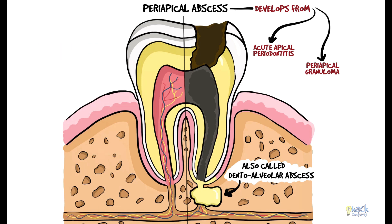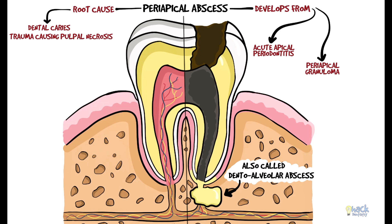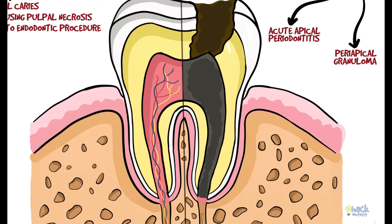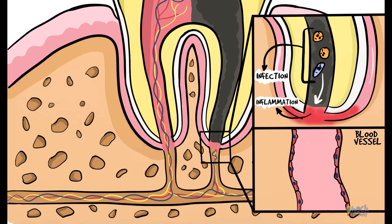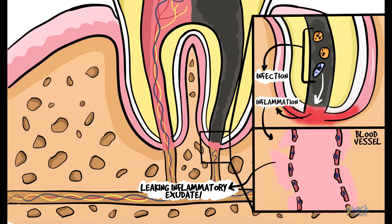Periapical abscess usually develops due to a carious infection of the pulp extending to the periapical region, traumatic injuries causing pulpal necrosis, or even periapical insults due to endodontic procedures. The seeping infection from the necrotic pulp may trigger an acute inflammatory process of the periodontal ligament at the periapex. It is an exudative process where the infection triggers a leakage of plasma proteins or an inflammatory exudate from the nearby blood vessels into the periodontal ligament space.